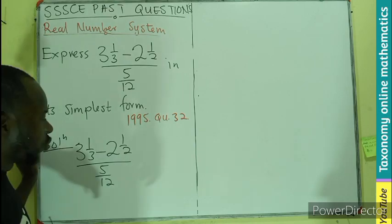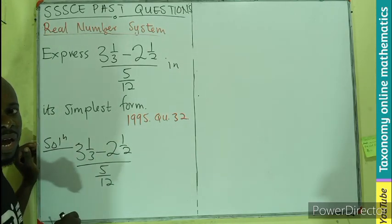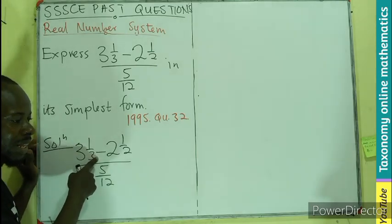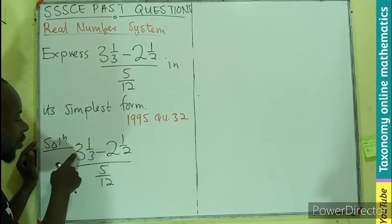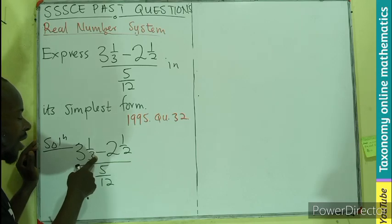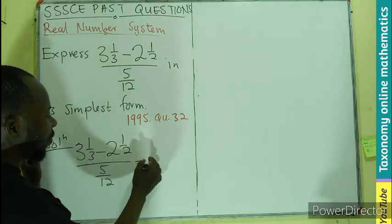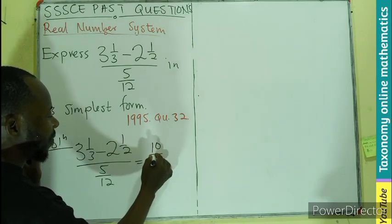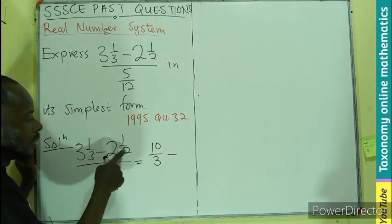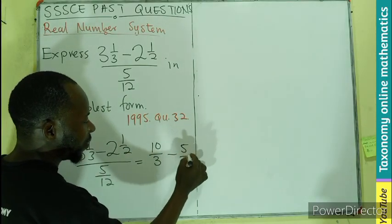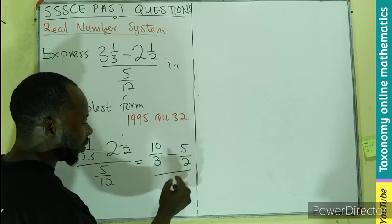We are going to change the mixed fractions into improper fractions. The whole number will multiply the denominator, then we add the numerator. So 3 times 3 gives us 9 plus 1, that would be 10, so I'll be having 10 divided by 3 minus 2 times 2 will be 4 plus 1, 5 divided by 2, still divided by 5 over 12.